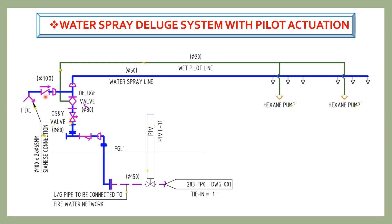Here is how the system works: when fire is detected near the hexane pumps, the pilot sprinklers activate, causing the pressure in the wet pilot line to drop. This pressure drop triggers the deluge valve to open, and water flows through the entire piping system, flooding the area with water from all the open nozzles to suppress the fire. The concept is the same for other actuation types — the only difference is the type of signal received by the deluge valve.